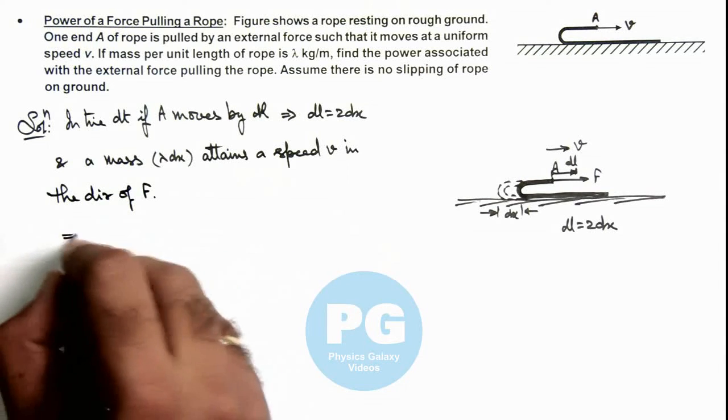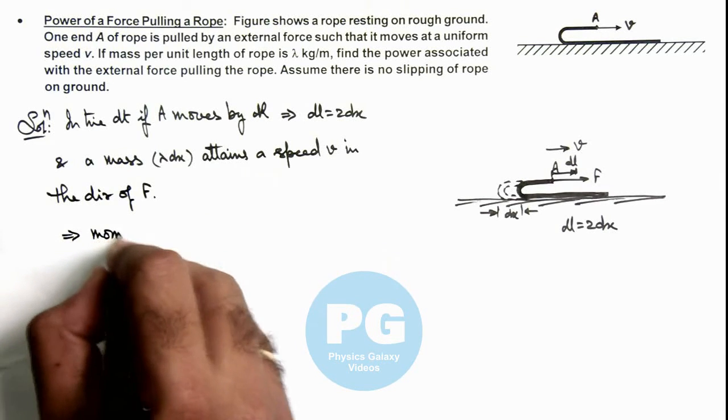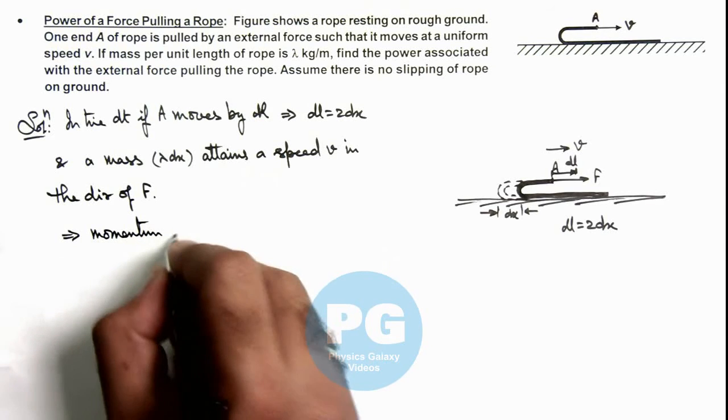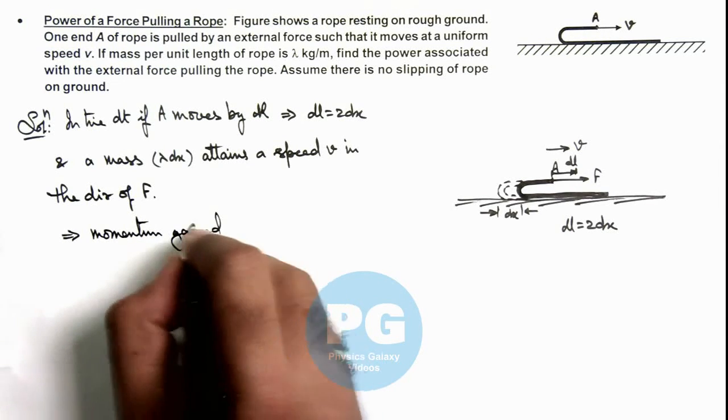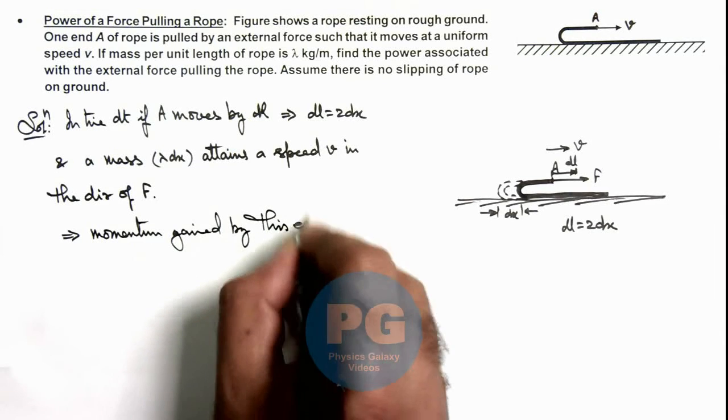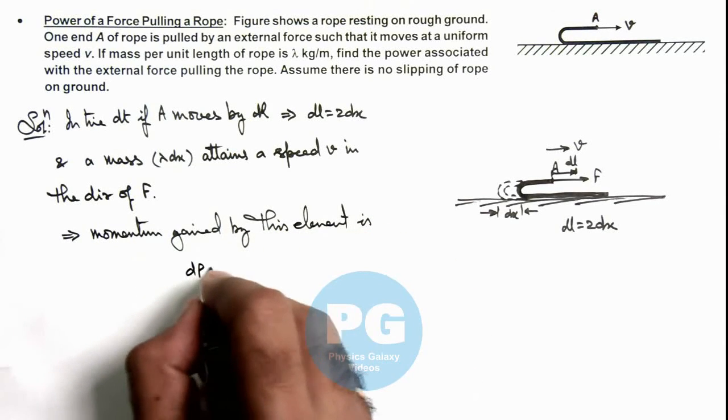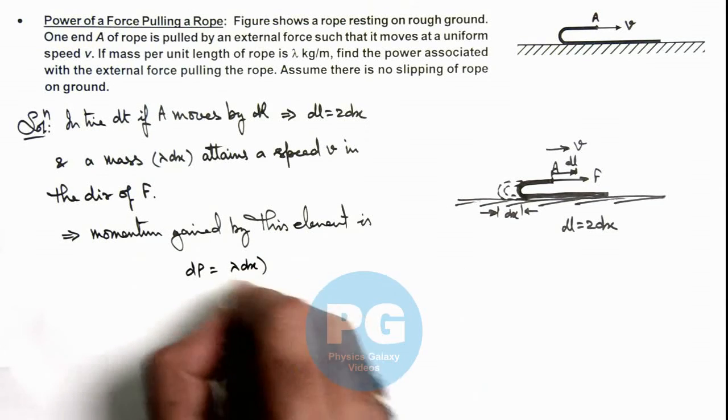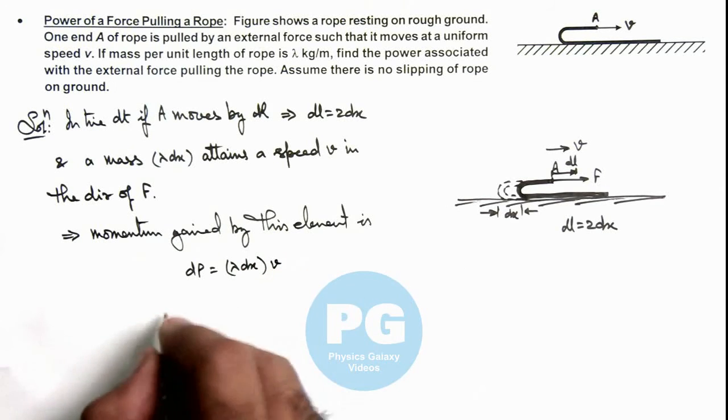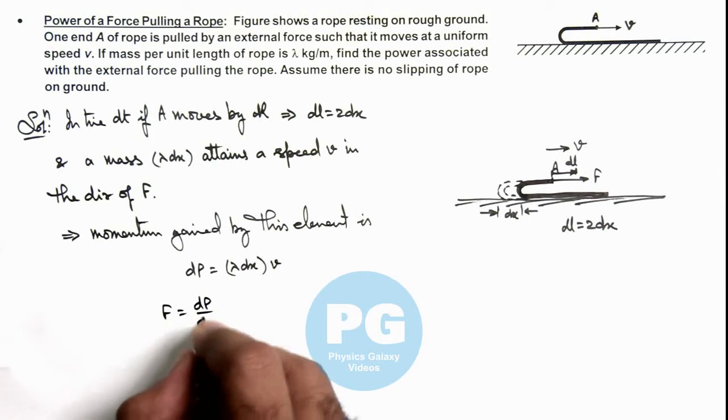That means if we calculate the momentum gained by this elemental mass or this element, dp can be written as λdx multiplied by v. So the value of force we can write as dp by dt.